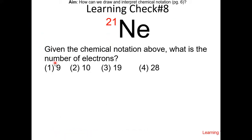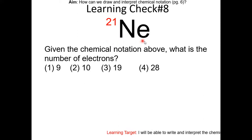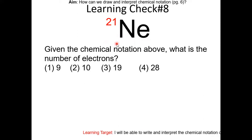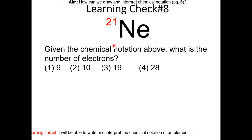Learning check number 8: given the chemical notation above, what is the number of electrons? Pause the video and try this yourself. First, figure out the atomic number of this element. NE is neon, and neon has an atomic number of 10. Since it's an atom, we assume it is neutral unless stated otherwise, so it must have 10 electrons.